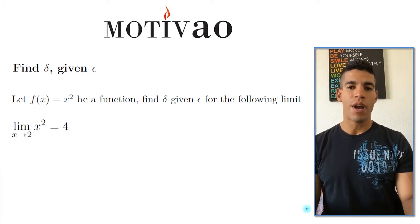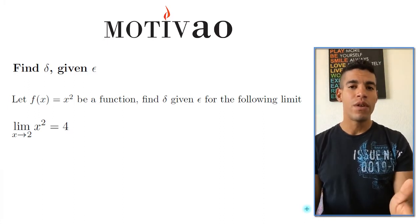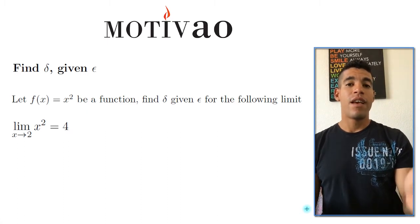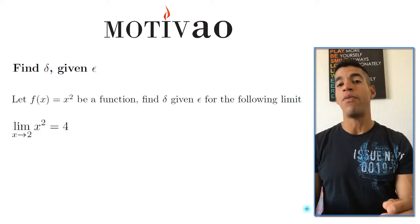So the function here is x squared. And the limit that I'm looking for is when x approaches 2. And then it says find that delta such that that limit is equal to 4.